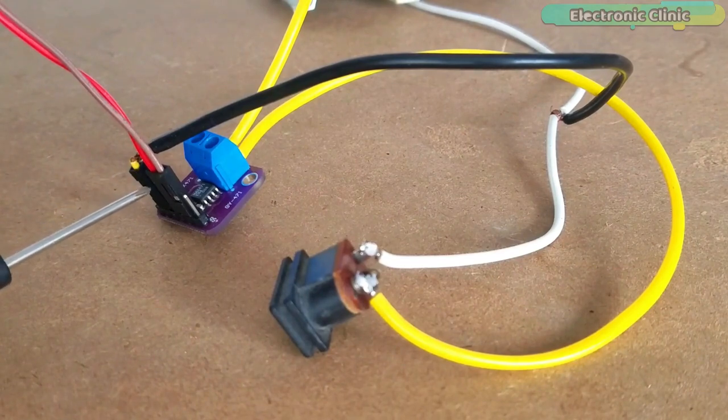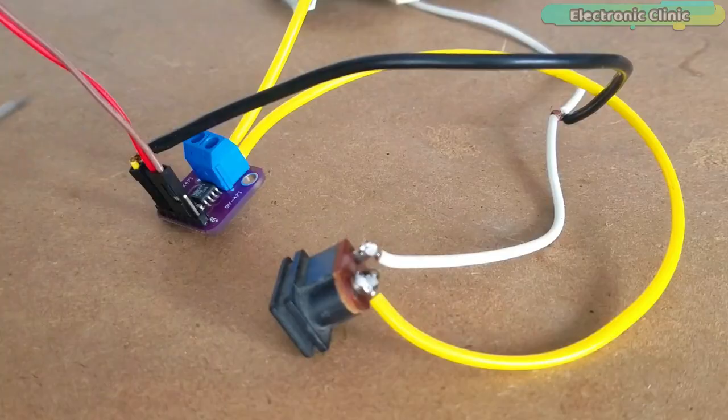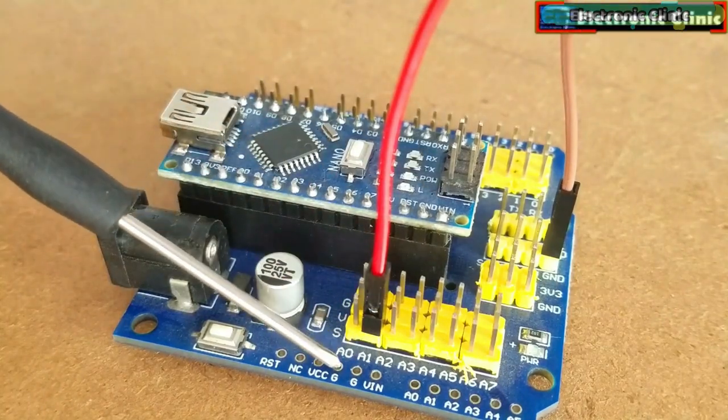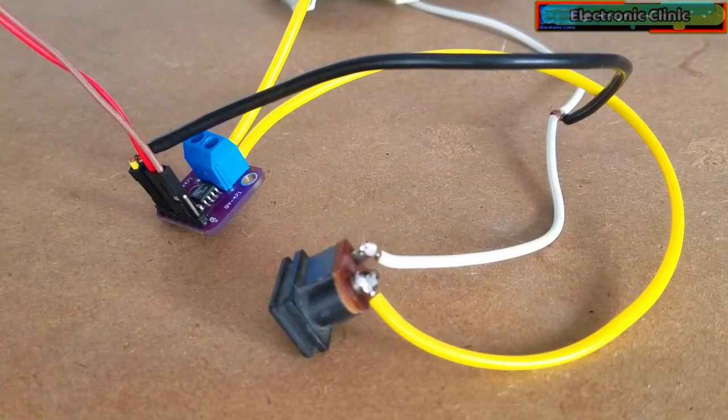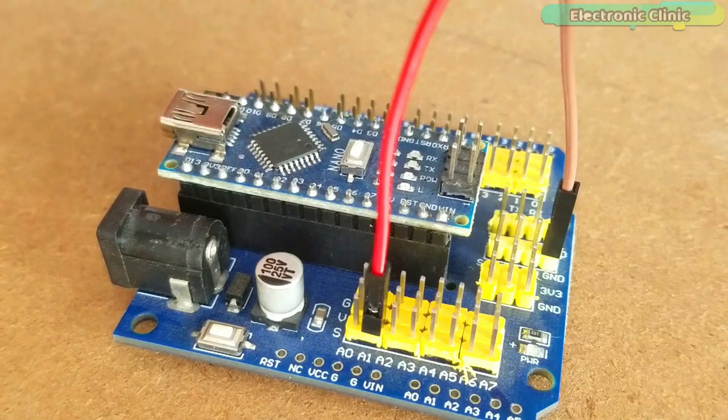The red wire is connected with the out pin which is connected with the analog pin A1 of the Arduino. While the ground pin of the MAX471 is connected with the ground pin of the Arduino.